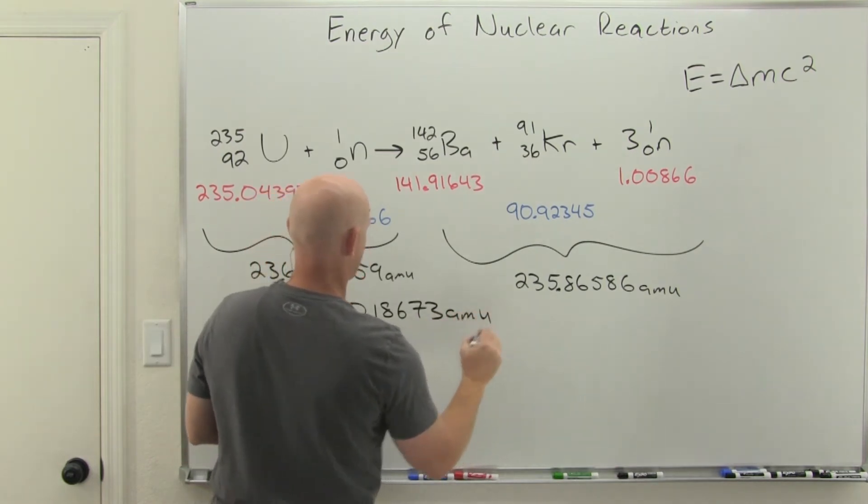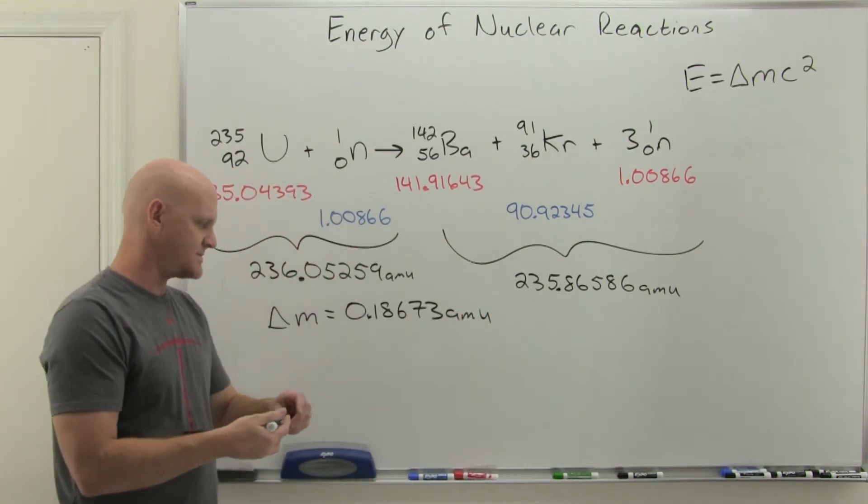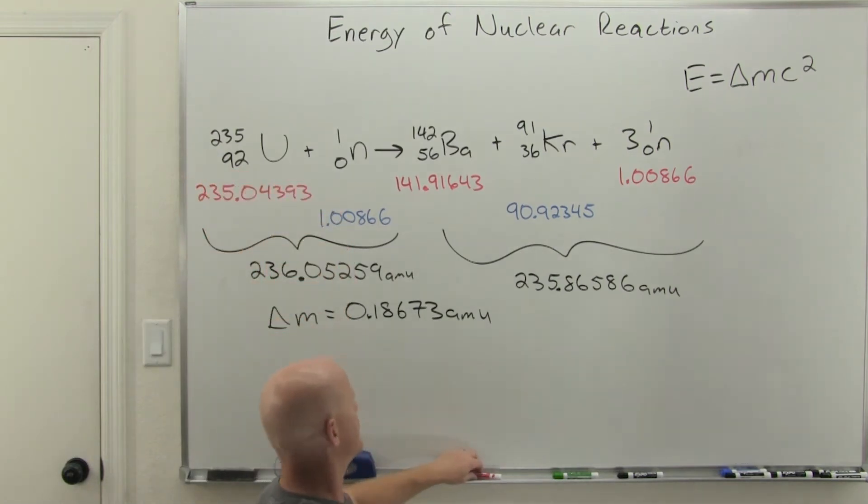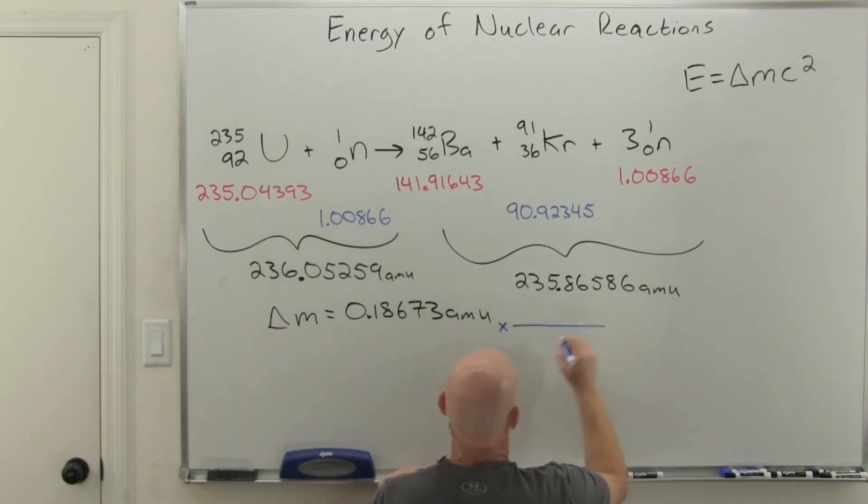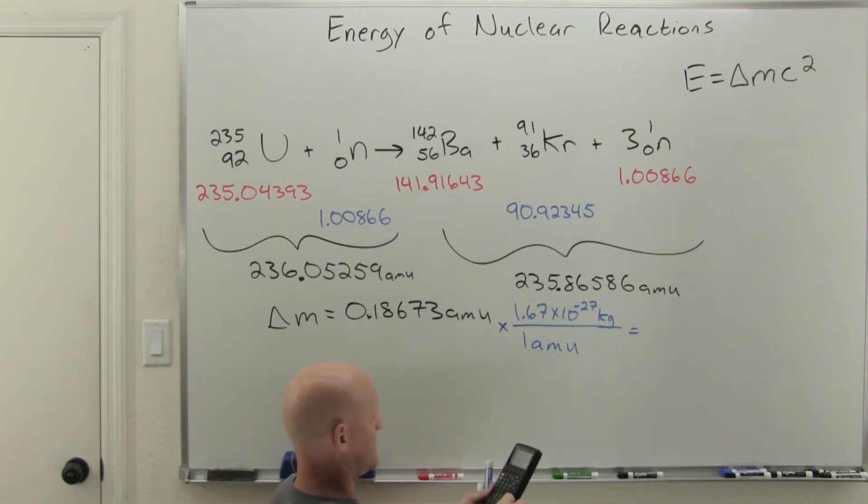Now we need to convert this into kilograms. I gave you that conversion on the study guide. We'll take 0.18673 times 1.67 times 10 to the negative 27 kilograms per AMU, and we're going to get 3.11839 times 10 to the negative 28 kilograms.